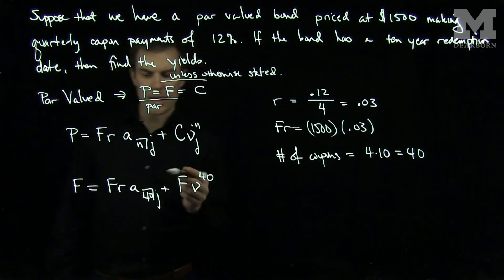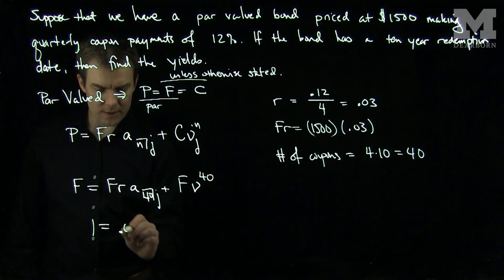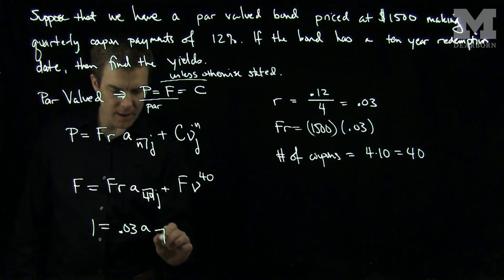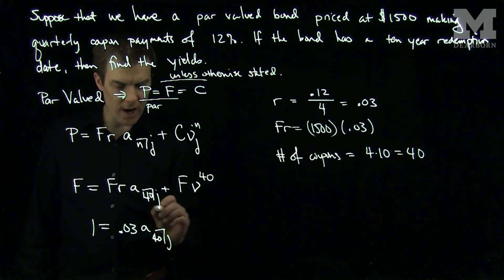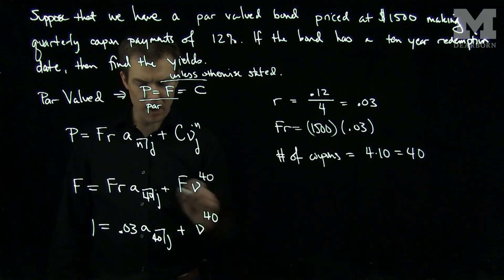And so we see that all the F's are going to cancel out over here, so we have 1 is equal to 0.03 A bracket 40 J, plus nu to the 40th power.